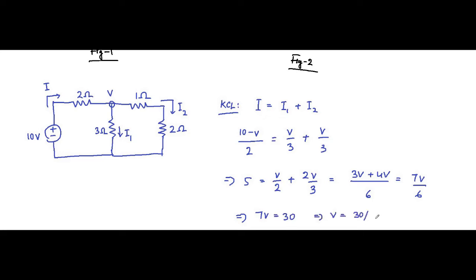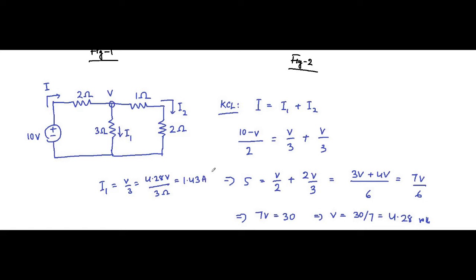So 7v/6 = 5, which implies 7v = 30, which implies v = 30/7, coming around to 4.28 volts. Our objective here is to calculate the current flowing through the 3 ohm branch, which is i1. So i1 = 4.28 / 3 = 1.4267, which we round off to 1.43 ampere. This is the current which we wanted — it was our objective to calculate this i1.